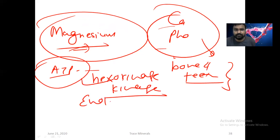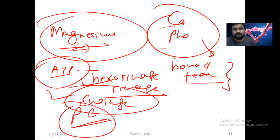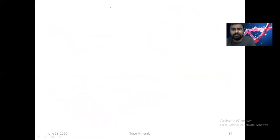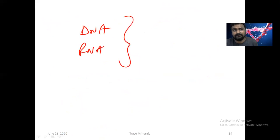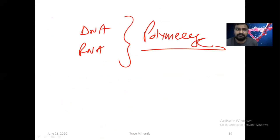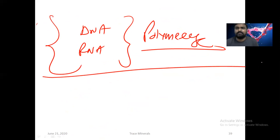Magnesium is also required for enolase and pyruvate carboxylase. In all these conditions, magnesium is required. It is also required for DNA and RNA polymerase. So in molecular biology also, magnesium is very, very important. This is all about the minerals.